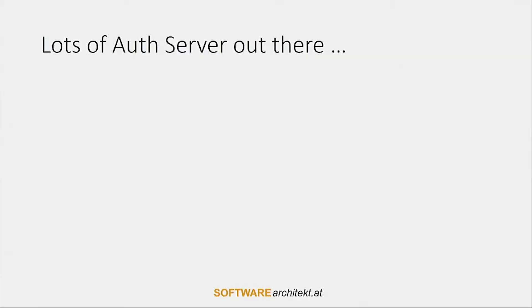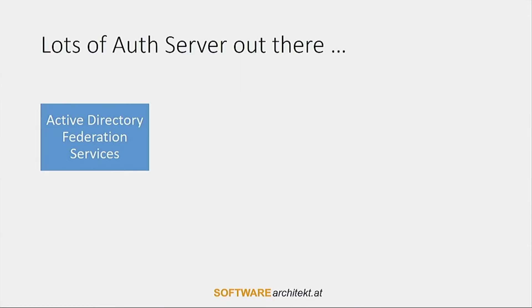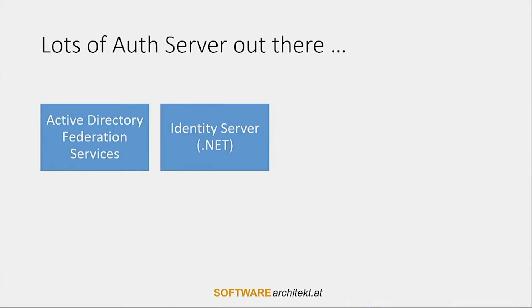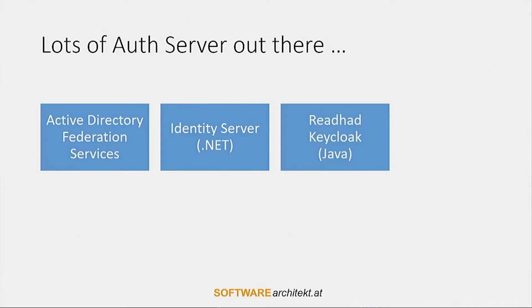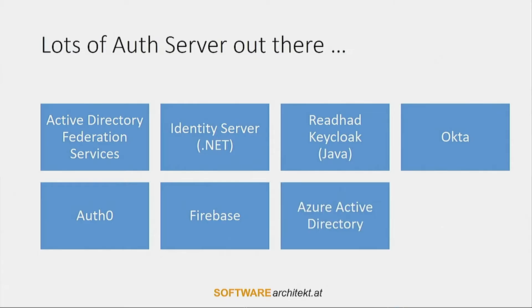It turns out we don't have to reinvent the wheel, because there are so many existing authorization servers out there. For instance, Federation Services sits on top of Active Directory from Microsoft. There is Identity Server for .NET, Red Hat Keycloak for Java, Okta — an identity-as-a-service cloud solution to get started quickly — Auth0, Firebase, and Azure Active Directory. You can subdivide them into on-premise products you install locally, and identity-as-a-service offerings that run in the cloud.